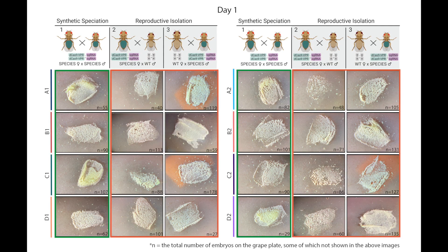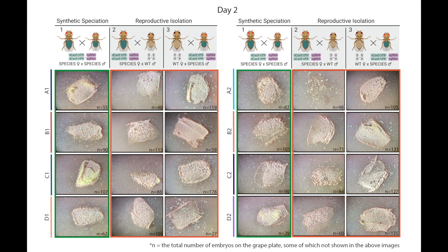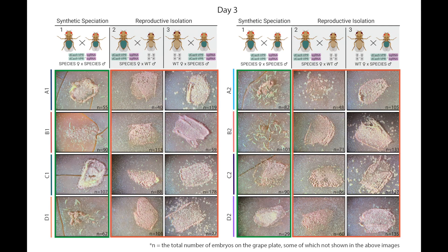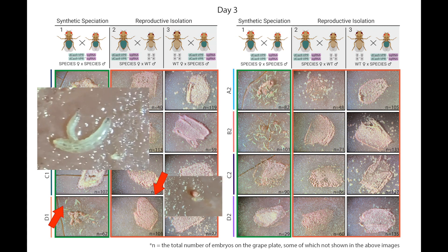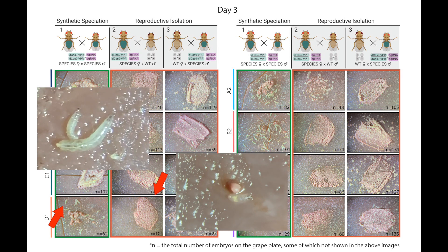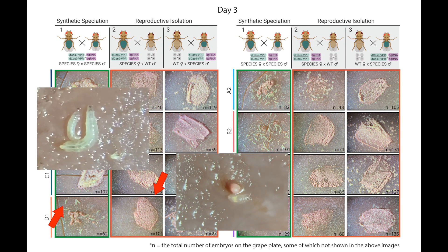As the graph shows, when the species are outcrossed to each other, viable progeny are produced. However, when the species are outcrossed to wild type, none of the progeny are able to survive past the first instar.